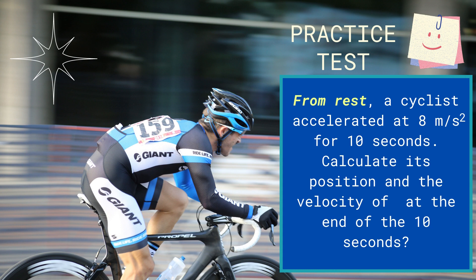Let's have a practice test. You may now get a piece of paper and try to solve this problem. From rest, a cyclist accelerated at 8 meter per second squared for 10 seconds. Calculate its position and the velocity at the end of 10 seconds.